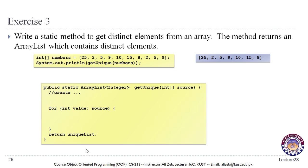Finally, here is an exercise: write a static method to get distinct elements from an Array, where the method returns an ArrayList containing only the distinct elements. This concludes our discussion of collections and ArrayList. We will continue to use these collections in future lectures — see you in the next lecture.